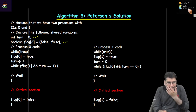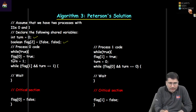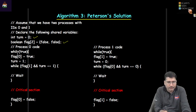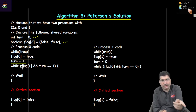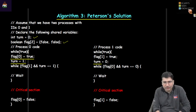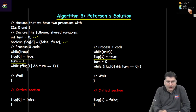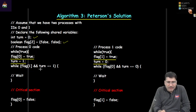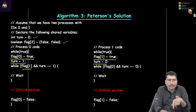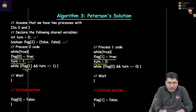Process 0 executes the code by first setting its own flag as true, and then setting the TURN for the other process. So process 0 sets TURN to 1, and process 1 will set TURN to 0 and set its own flag. Then the condition is checked: process 0 checks flag 1 and also checks whether TURN equals 1. Since process 0 itself set TURN to 1, that part of the condition is already true.